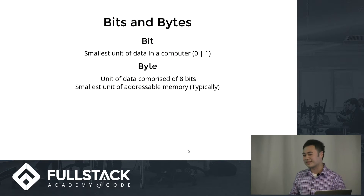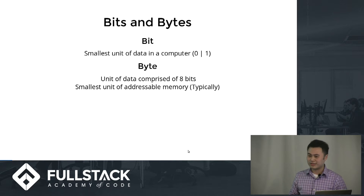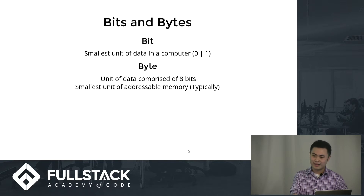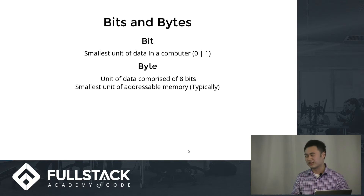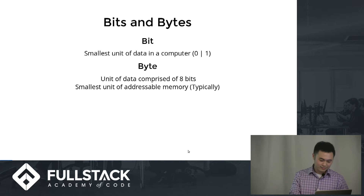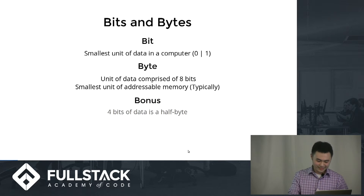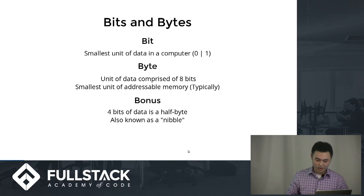A bit is the smallest unit of data in a computer. It's typically represented by zeros and ones. And then a byte is eight bits, typically the smallest addressable unit of memory. And here's a bonus: four bits of data is a half byte, but it's also known as a nibble.